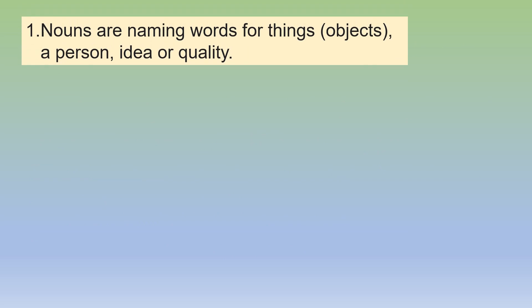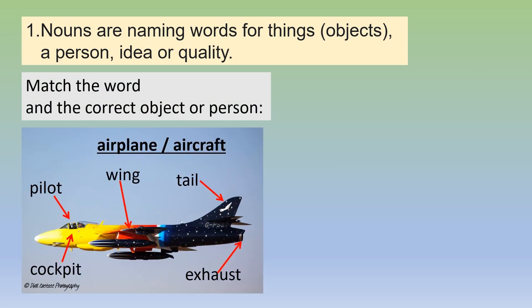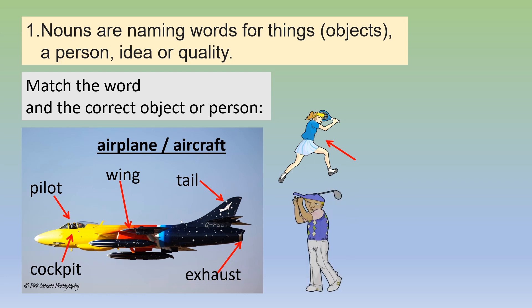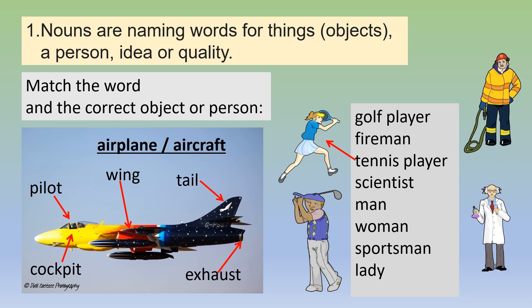One: nouns are naming words for things, objects, a person, an idea or a quality. Match the word and the correct object or person. Airplane, aircraft — we have pilot, wing, tail, cockpit and exhaust. Now we have people here: a tennis player, a golf player, a fireman and a scientist. You can match multiple words for the same character or person.